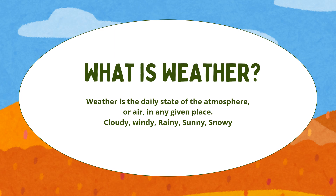For a deep dive into types of weather, first of all let's understand what is weather. Weather is what's happening outside right now. Is it sunny? Is it raining? Is it windy? What's the weather? Weather is the daily state of the atmosphere or air in any given place.